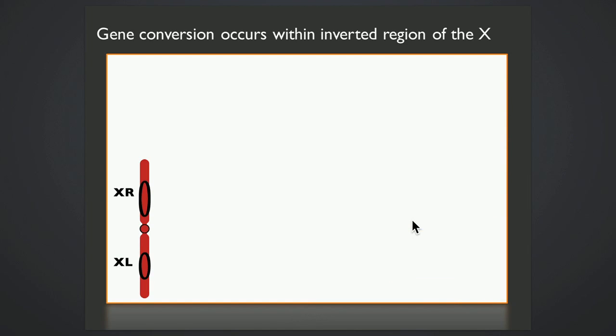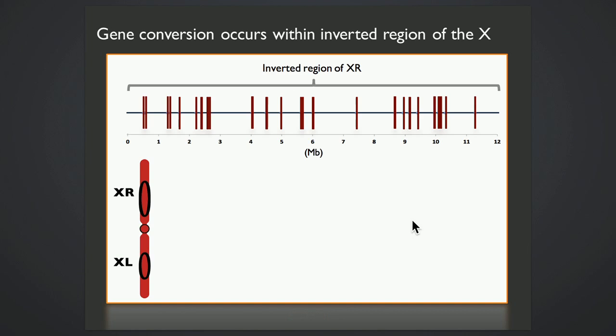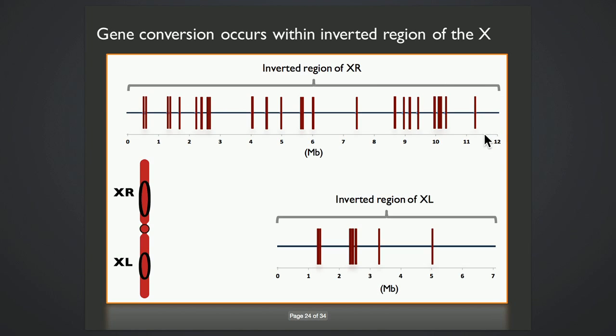So I've identified gene conversion throughout both inverted regions of the X chromosome in the interspecies cross. And this is the inversion on XR, shown from breakpoint to breakpoint. It's roughly 12 megabases. And here is XL.